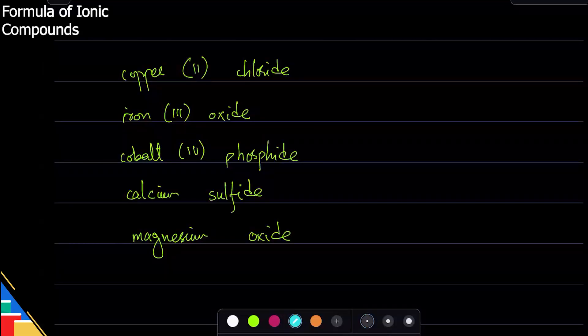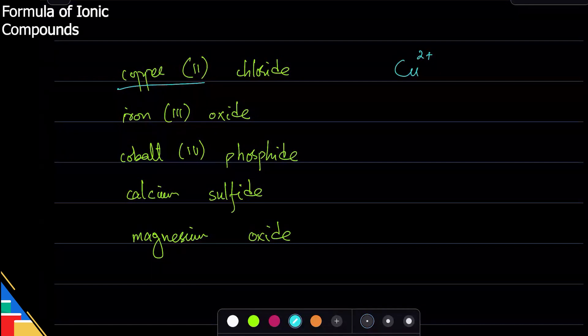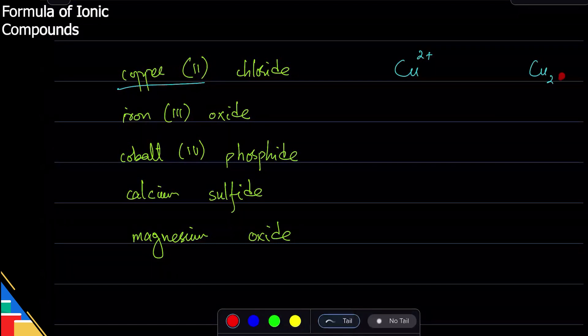When the name is given, how do you write the formula? For example, copper ion - you can write plus two or two plus, both are fine, but make sure you write it at the top. One mistake students make is that they sometimes write it at the bottom. Remember, something else goes there - this is not the charge.